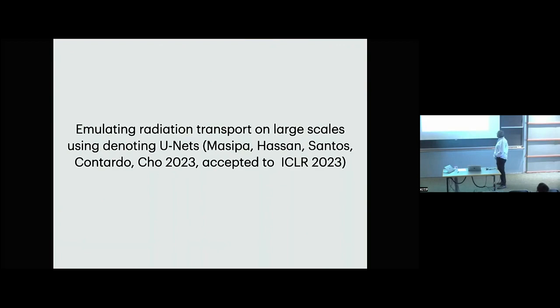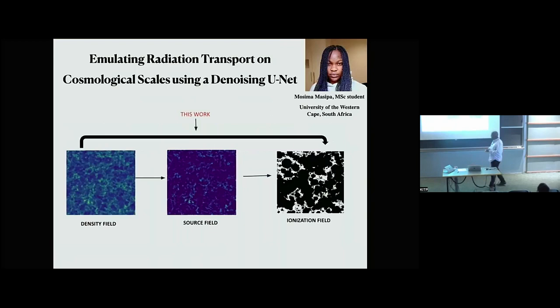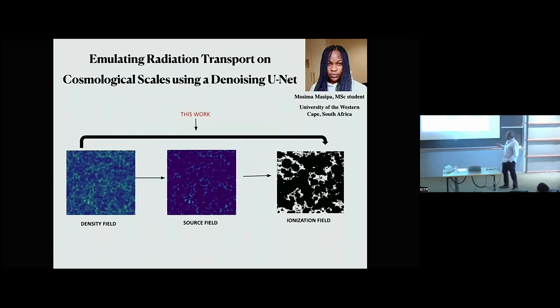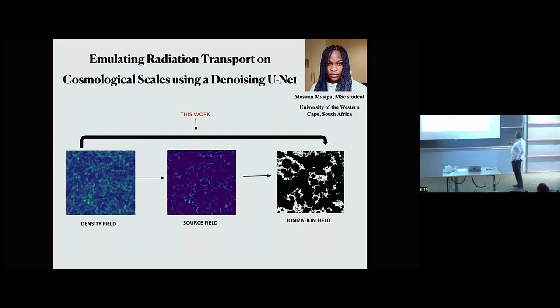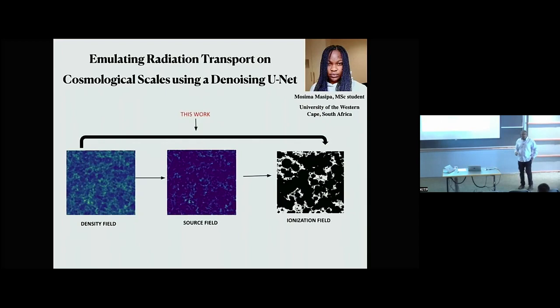The first project is led by my student in South Africa, Musima — it's been recently accepted to ICLR. The basic idea: can we emulate radiative transfer at large scales? In most reionization simulation workflows, you have the density field, you run grid-based codes to find sources, and then you apply a radiative transfer scheme — either approximated or full. This step is extremely expensive, and if we want to enable inference at the field level with future observations, we need to speed it up.